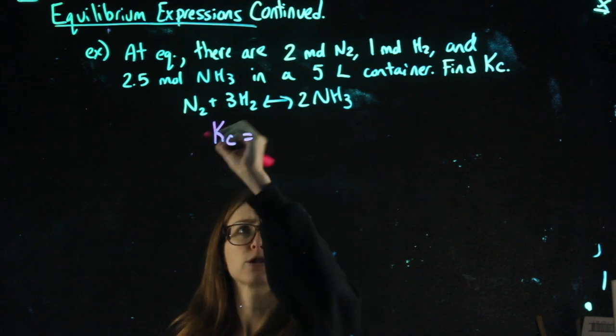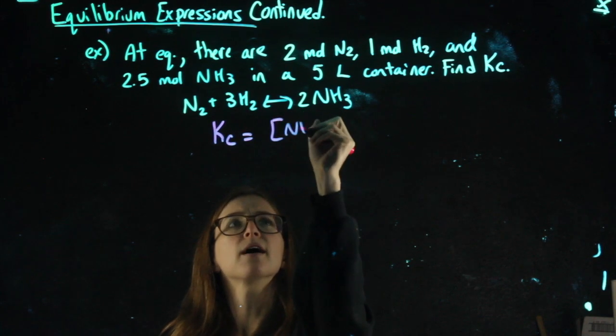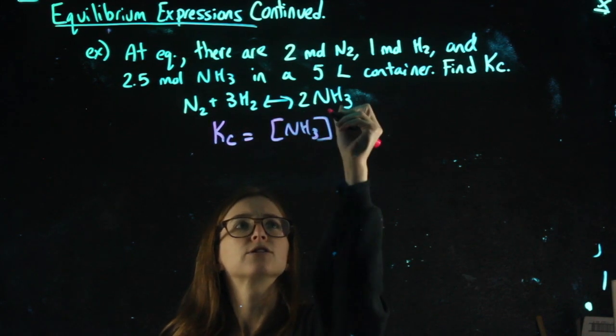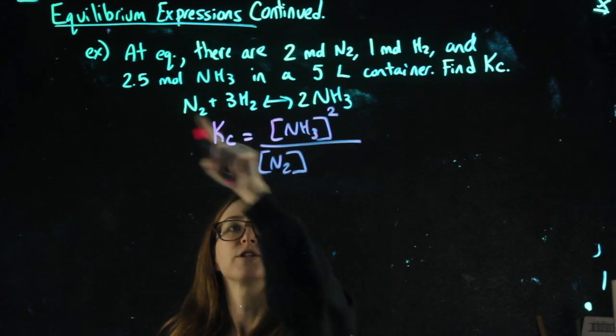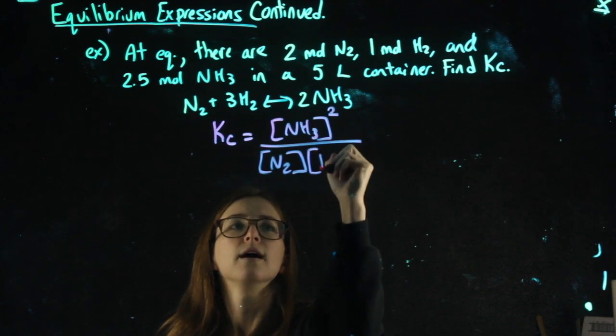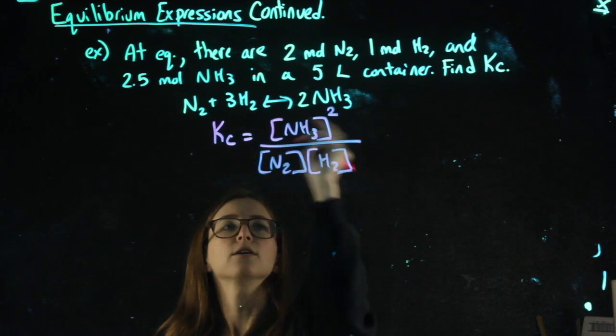So products over reactants. NH3 is our product. It's going to be squared. N2 is a reactant, no coefficient, no exponent. H2 is a reactant, cubed.